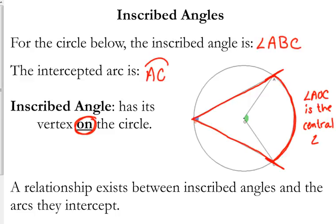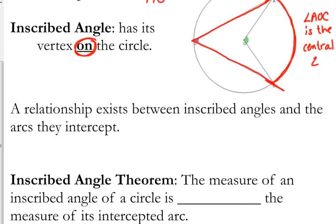There is a relationship that exists between inscribed angles and the arcs they intercept. We know that central angles — whatever the measure of AOC is — will also be the measure of the arc. But looking at it, does the central angle and the inscribed angle have the same measure? No. The inscribed angle is smaller. There's a specific relationship that exists.